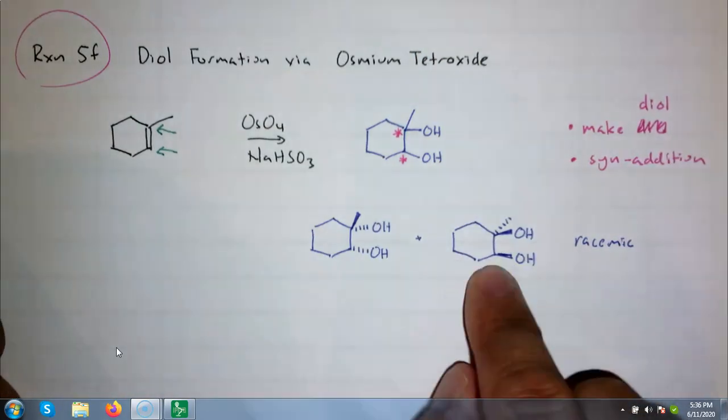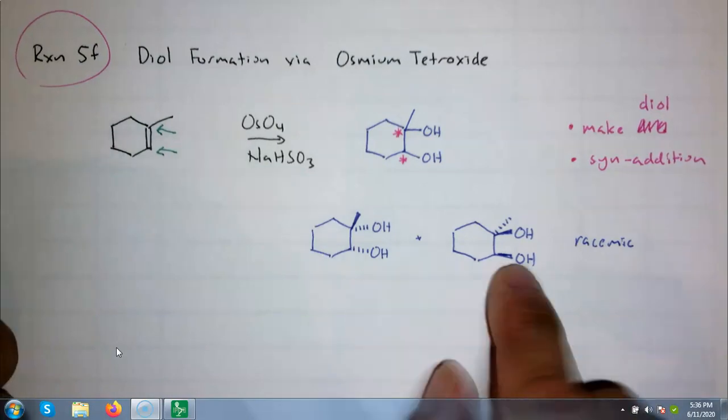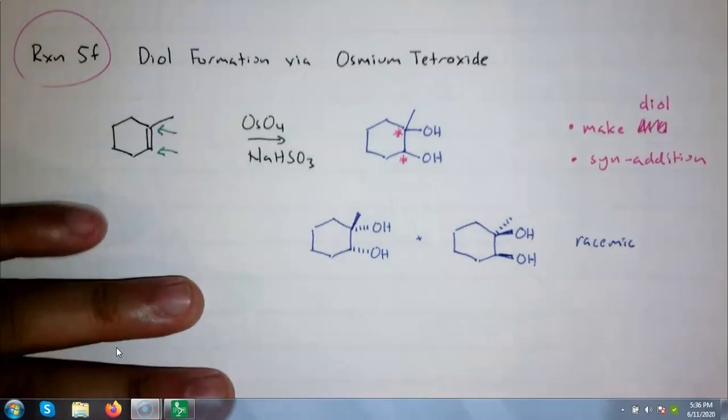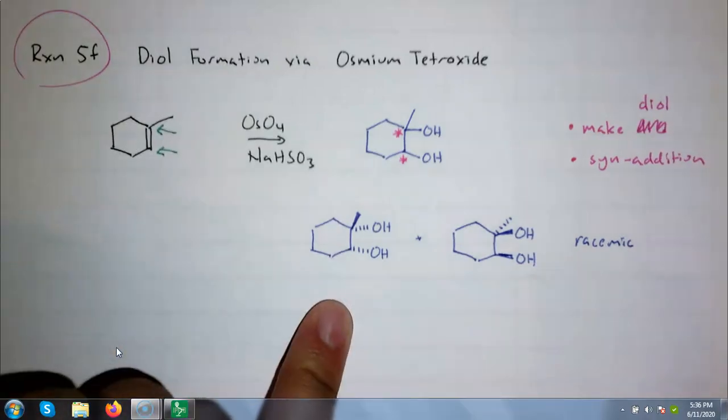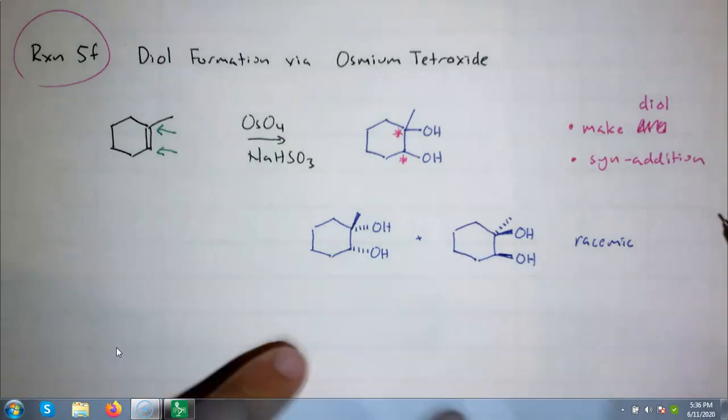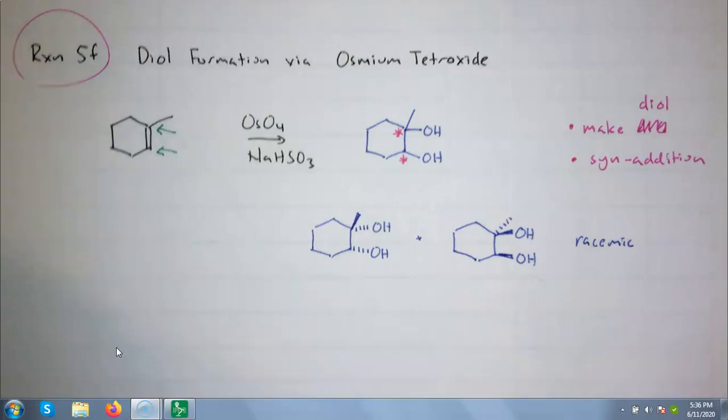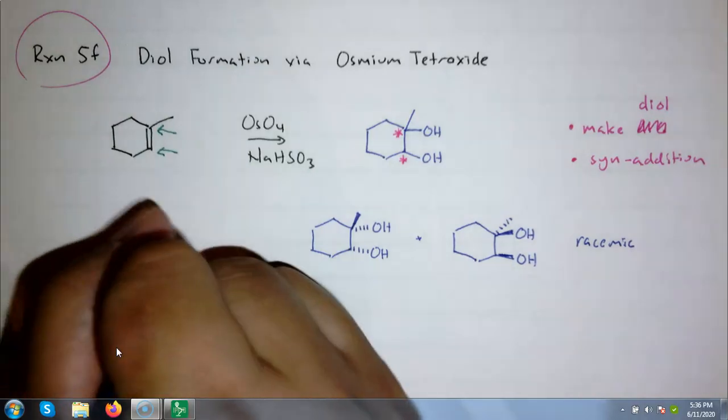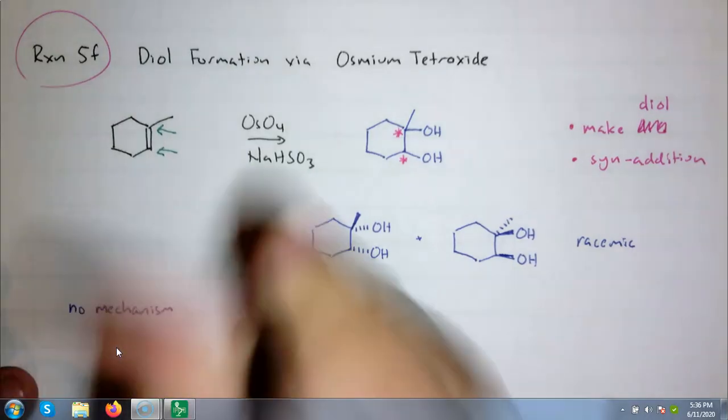Do you remember what enantiomers are? Like my hands. My hands are mirror images that are not identical, not superimposable, or non-superimposable. This is stereoselective. And you may ask, how can it be selective if there's a mixture? Well, it's selecting these two molecules over two other molecules. The two molecules where there is anti-addition. I think everyone's going to like this. No mechanism tested on this. I'm not going to test you on the mechanism for this reaction.